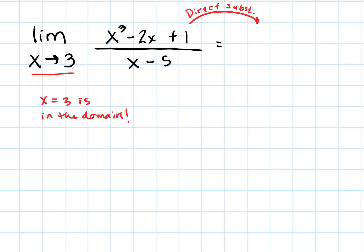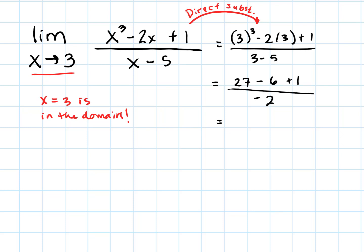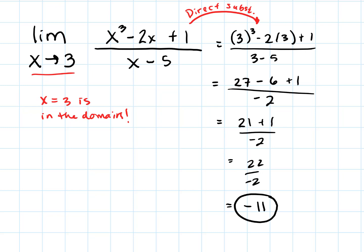Plugging in 3, we get 3 cubed minus 2 times 3 plus 1 over 3 minus 5, which gives us 27 minus 6 plus 1 over negative 2. That's 21 plus 1 over negative 2, or 22 divided by negative 2. Our answer for this limit is negative 11. We calculated a limit using direct substitution — it means this rational function is approaching negative 11 as x approaches 3.